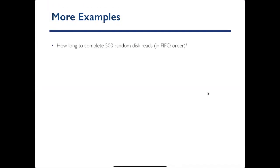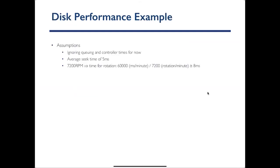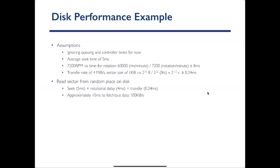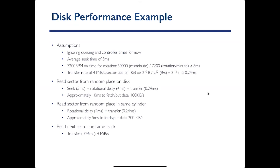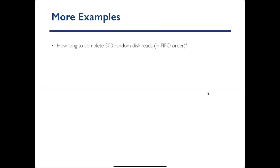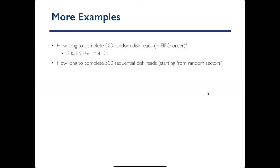As a reminder, we saw that a single random access takes about 9.24 milliseconds. Now, what happens if you have 500 random disk reads in FIFO order? You're going to simply multiply 500 by that latency of a single random read to get 4.12 seconds.